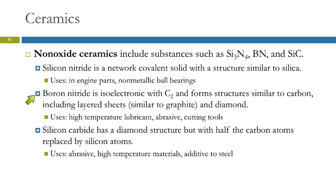Boron nitride is interesting because it has the same number of electrons as two carbon atoms together. Boron has one fewer proton and electron than carbon, and nitrogen has one more. So if you put one boron and one nitrogen together, you have the same number of electrons as two carbon atoms.